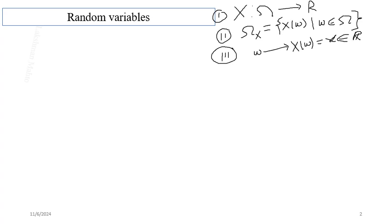Small x is always random in nature because small omega is always random in nature. So small omega is called a random outcome and small x is called a random number. The randomness of small x comes from the random nature of small omega, not from capital X. Capital X is just a function — a rule — which is always deterministic in nature. For example, a square root function is a deterministic rule; we take a number and apply the rule.